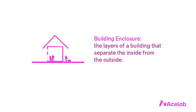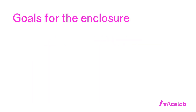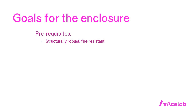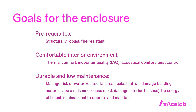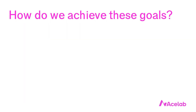We want to use the building enclosure to separate the inside from the outside so that we can create a particular set of interior conditions. Our enclosure must be structurally robust and fire resistant — these are prerequisites. Next, the enclosure must permit us to create a comfortable interior environment: thermally comfortable, with good indoor air quality, acoustically comfortable, and so on. And finally, we want the enclosure to be durable and low maintenance.